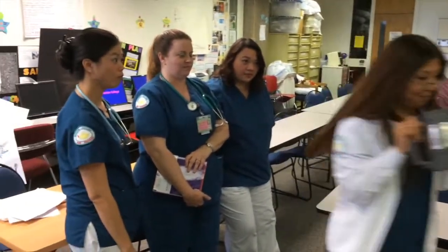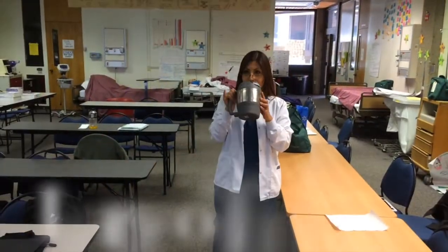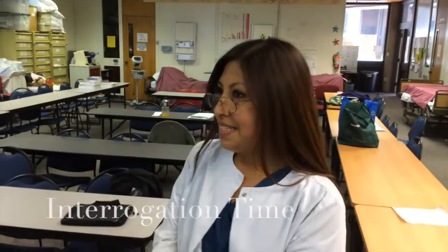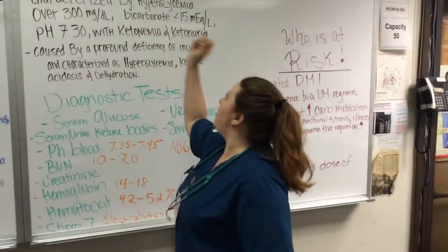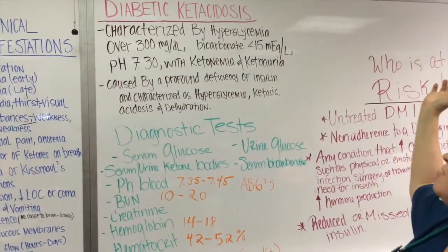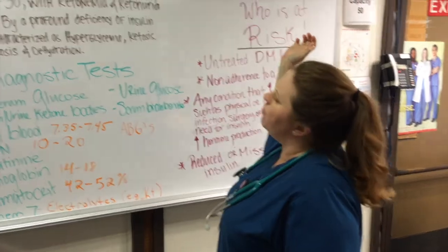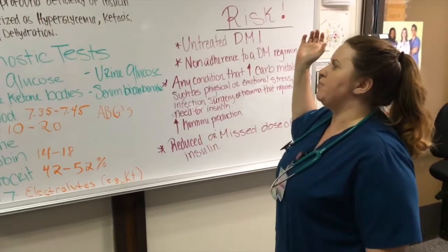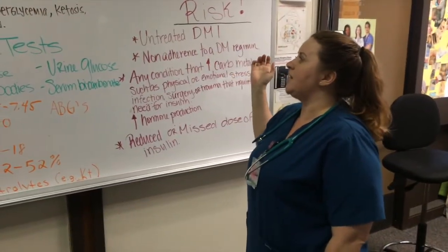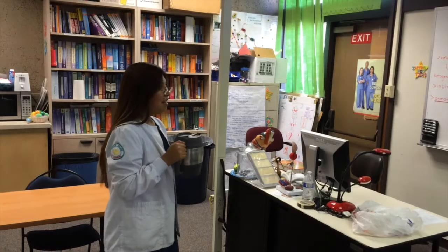Be back in 15 minutes. Okay guys, Dawn, since you're standing right by the board, what is DKA? Well, it's a condition characterized by hyperglycemia over 300 milligrams per deciliter, bicarbonate less than 15 milliequivalents per liter, a pH of 7.30 or less with ketonemia, ketonuria. And it's caused by a profound deficiency of insulin and characterized as hyperglycemia, ketosis, acidosis, and dehydration. Thank you, Dawn.